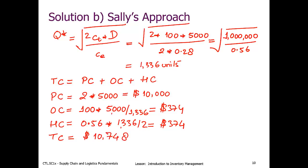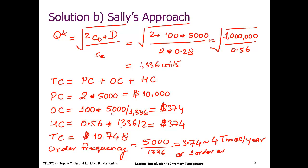Well, while we are here, can we also calculate the order frequency? I think we were asked in the question for the order frequency. Yes. So we order 5,000 units in batches of 1,336. This gives a value of 3.74. Let's round it off to 4. What it means is roughly 4 times a year, or 1 order every 3 months. This becomes our order frequency.